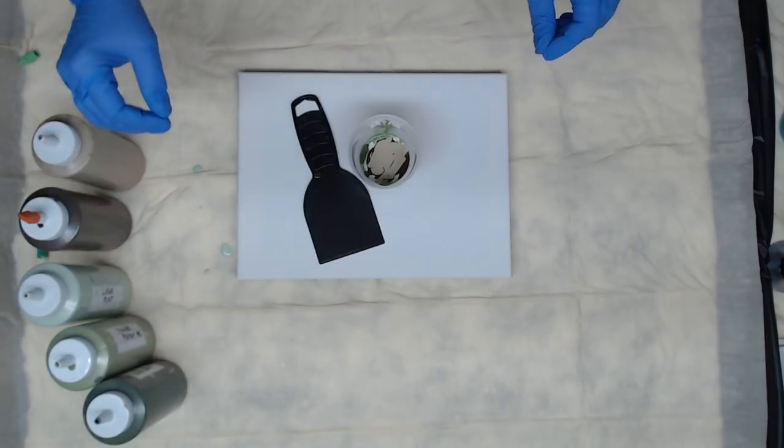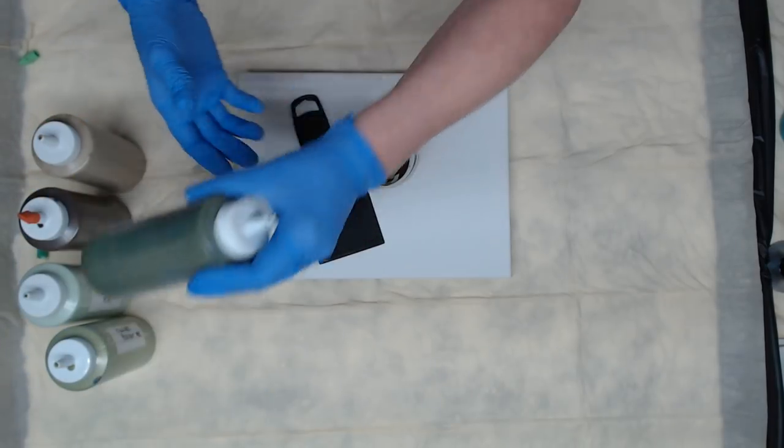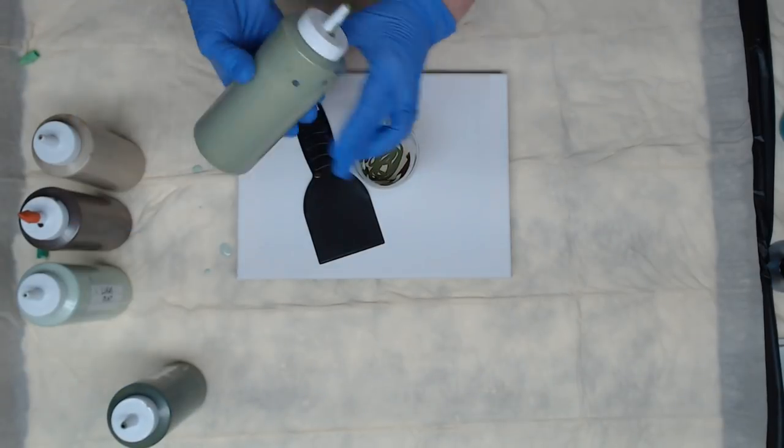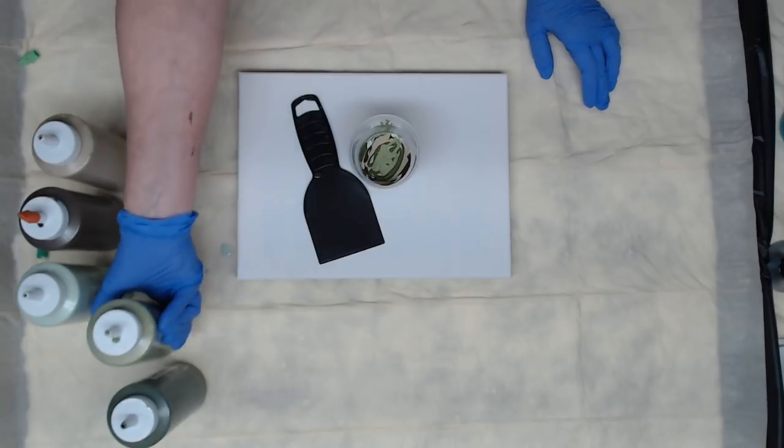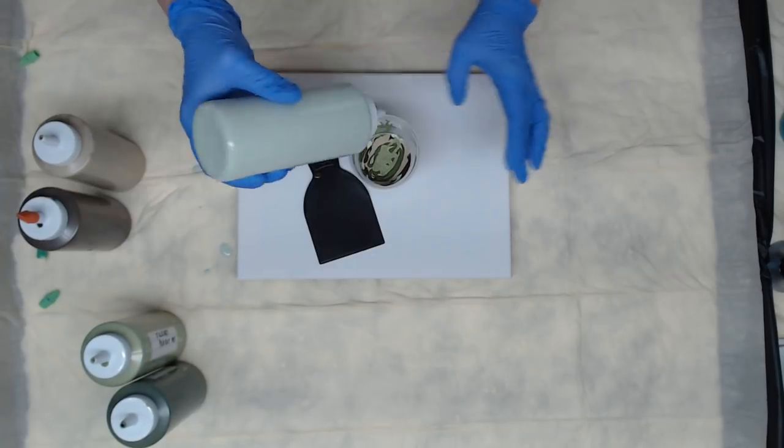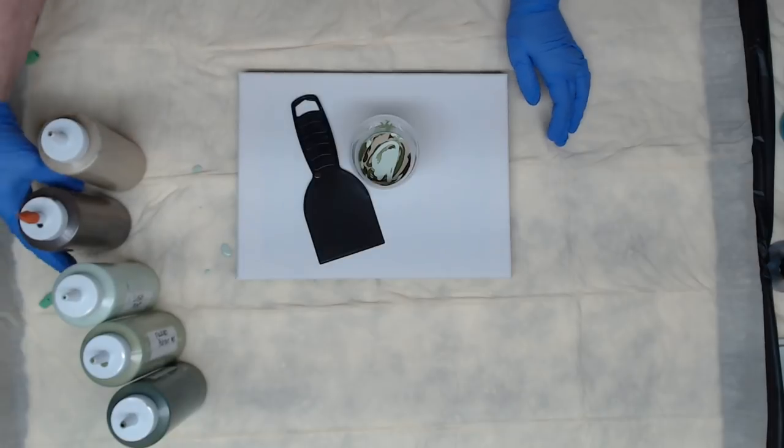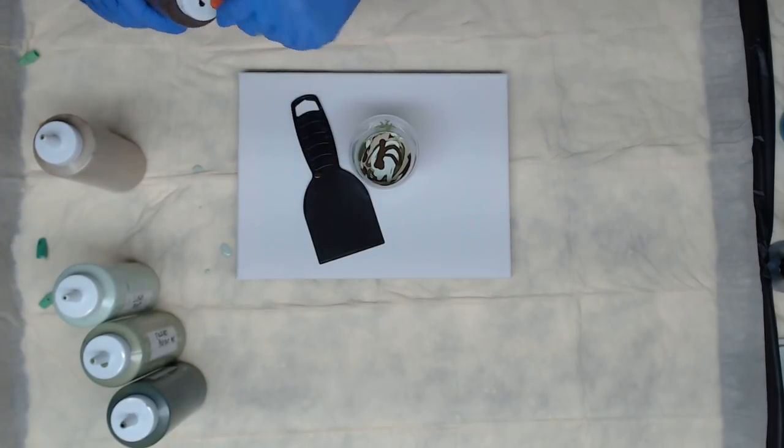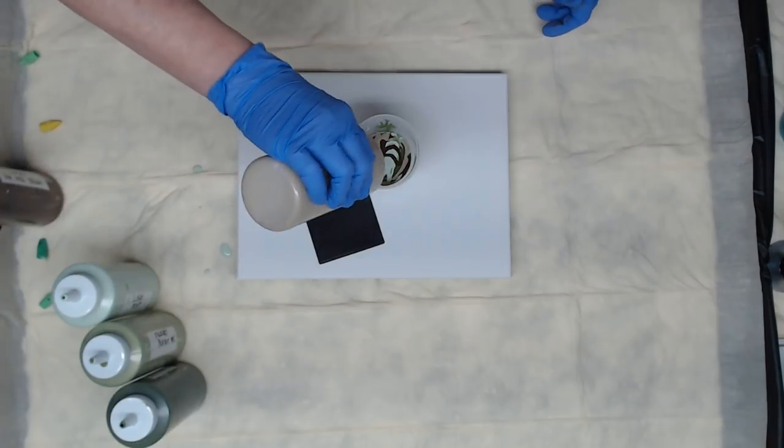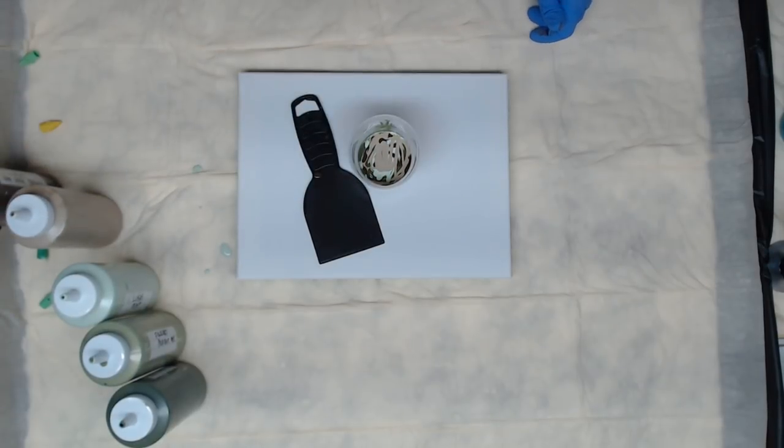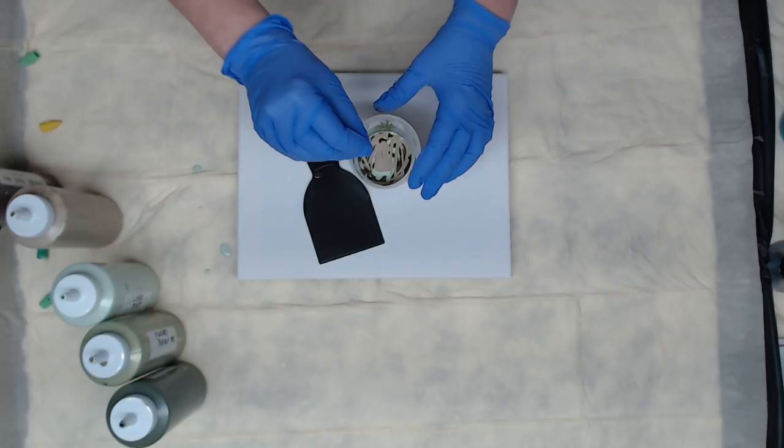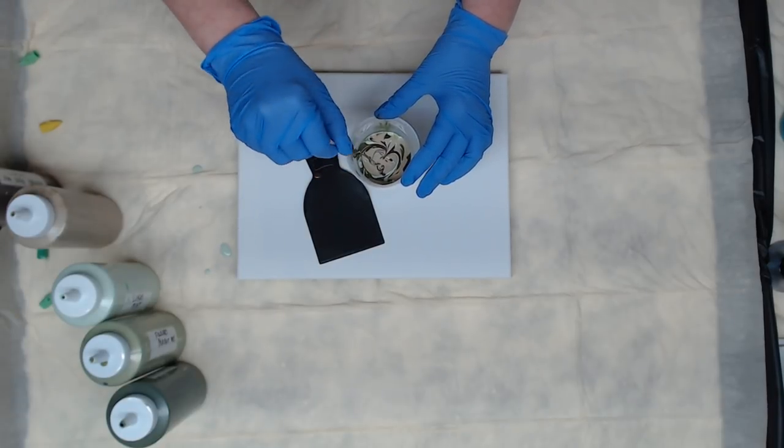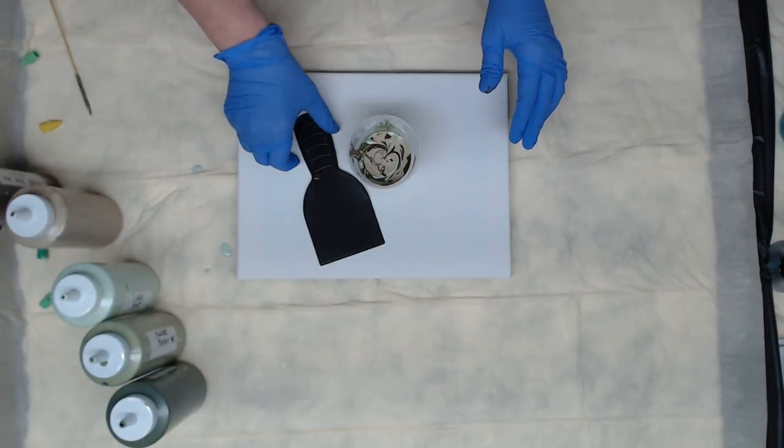And I think I'll go back with the green. Just to give us a little more color. We're not doing them quite as heavy as the first time. Just a touch of brown. And some gold. And I'm going to swirl that just a little bit. That gold is sitting right on top.